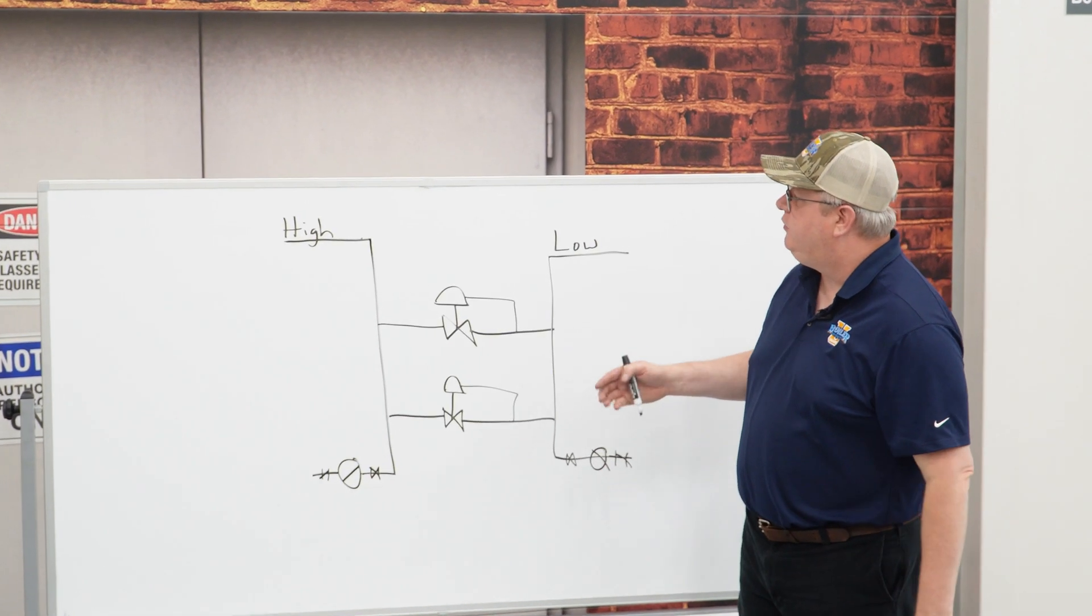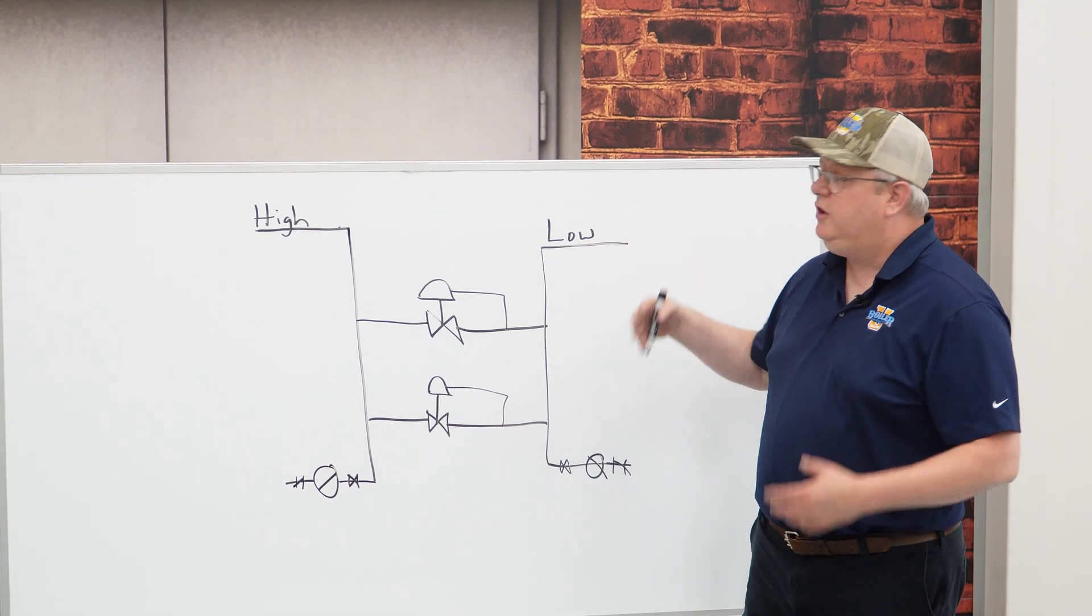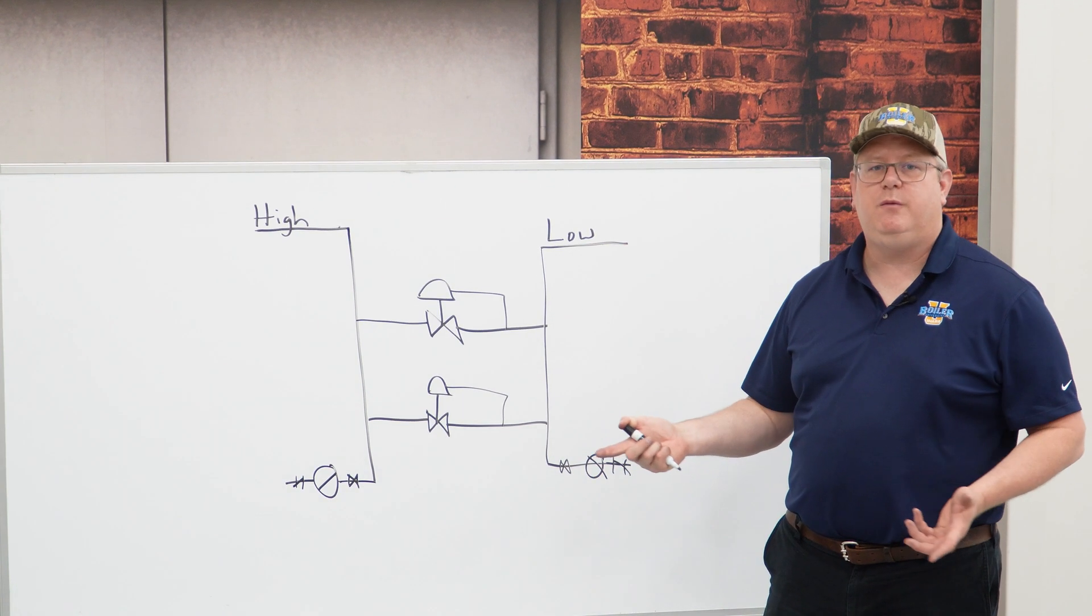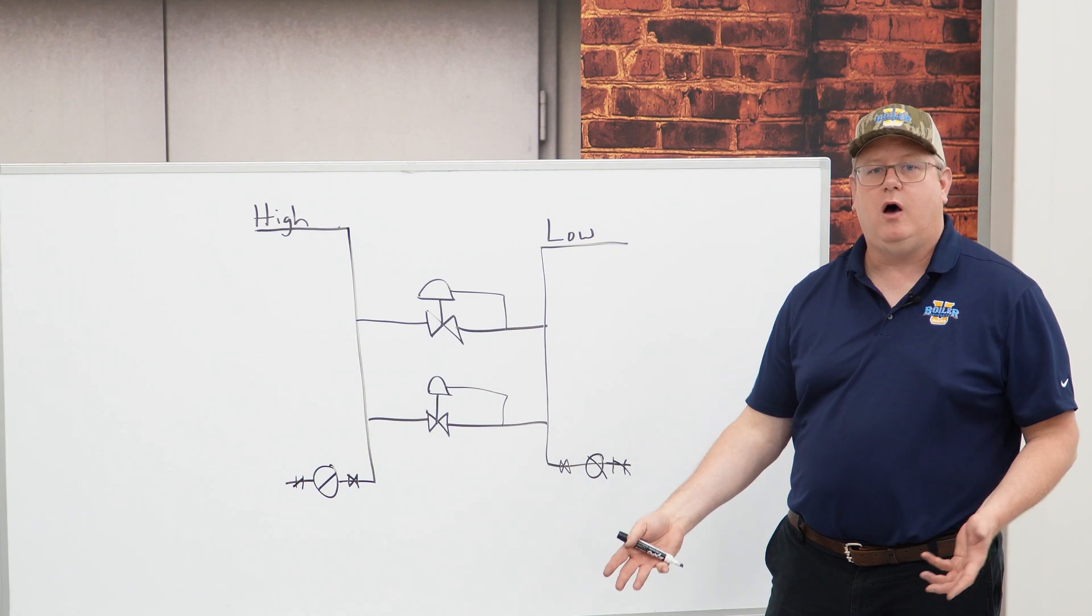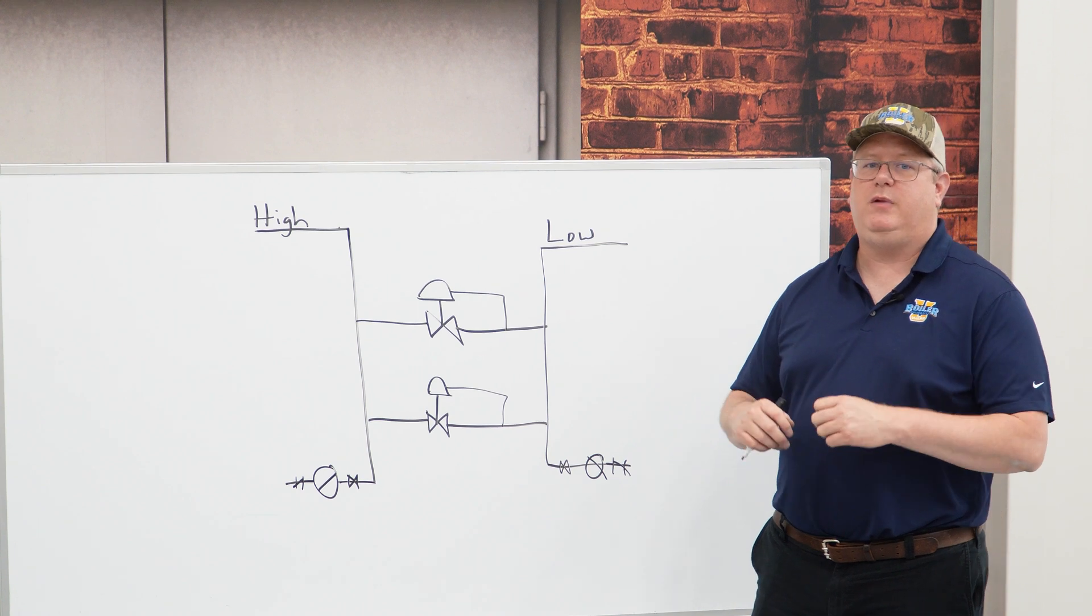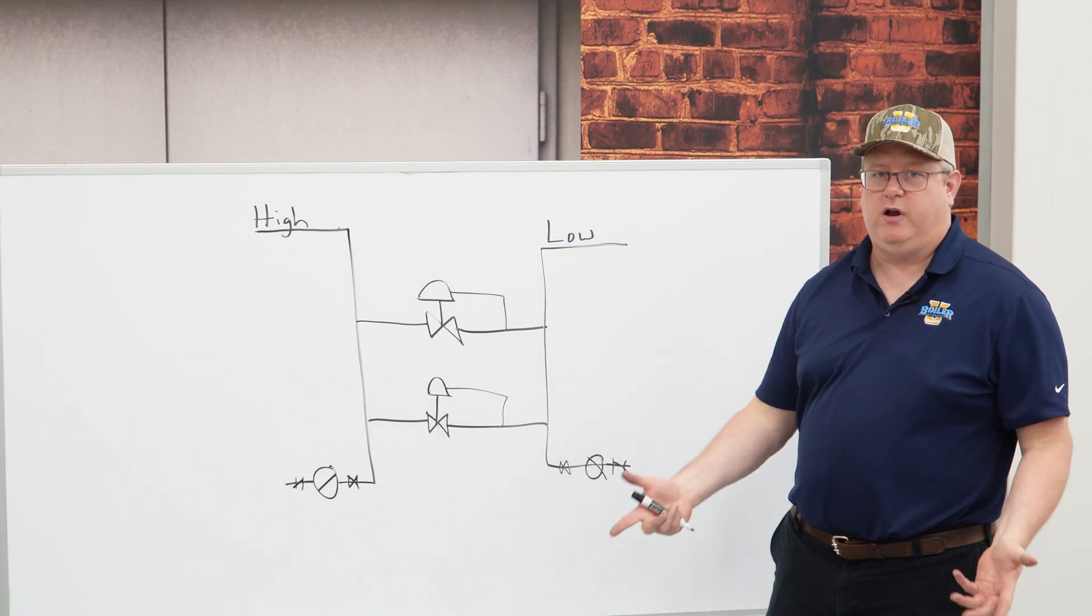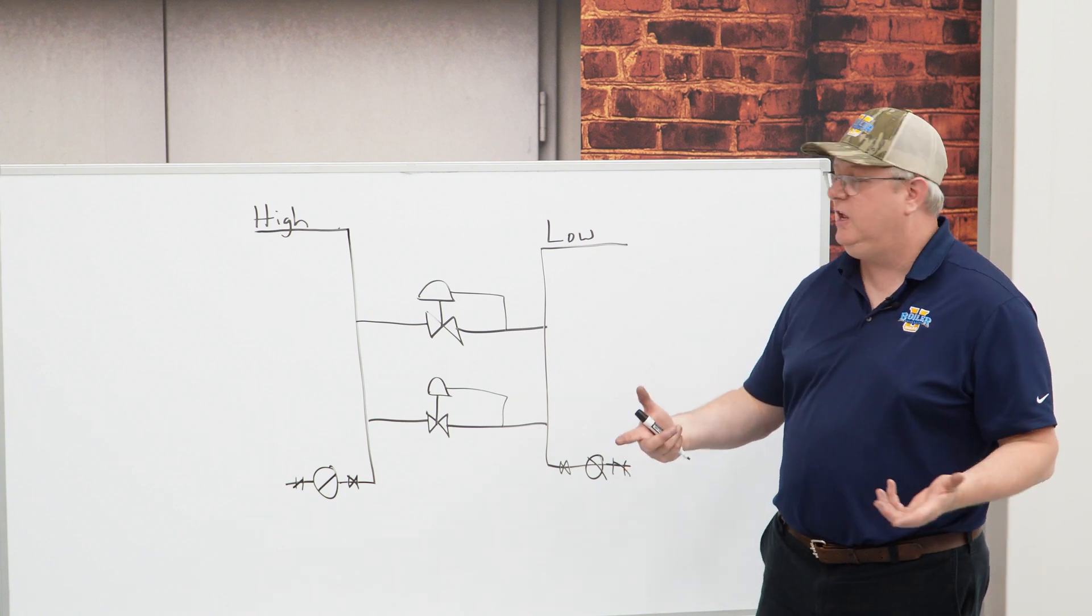So typically what we want to do is look at our inlet pressure and look at our outlet pressure. We'll be using the smaller PRV probably when we're in low load situations. It might be in the summer if we're using it for plant heat, it might be in production when we're slowing down our production rate and we don't need as much steam.